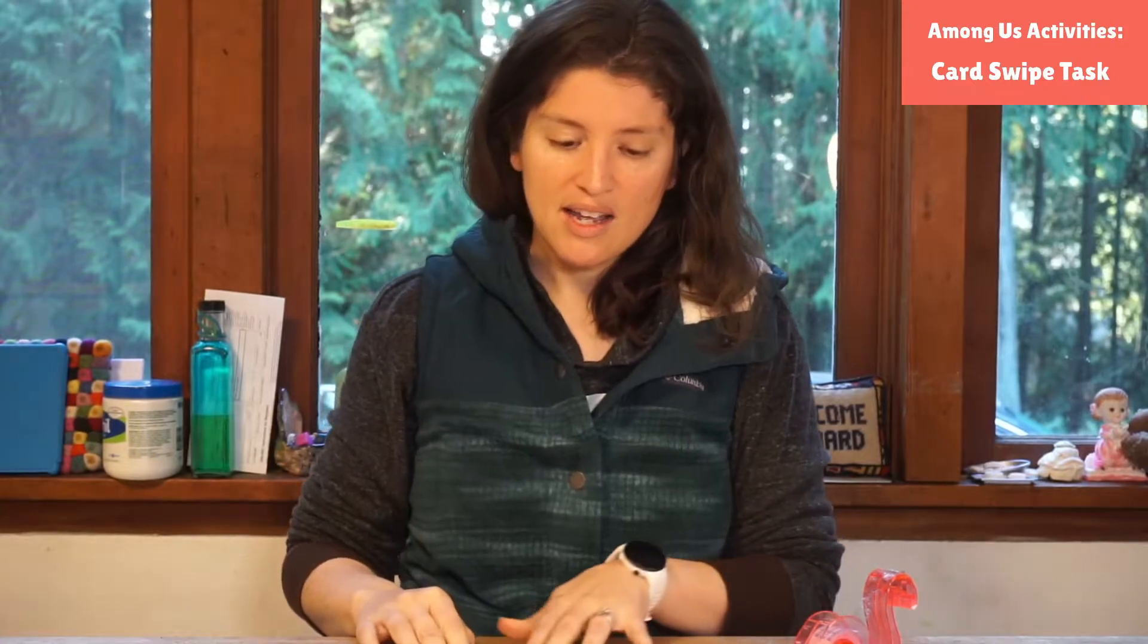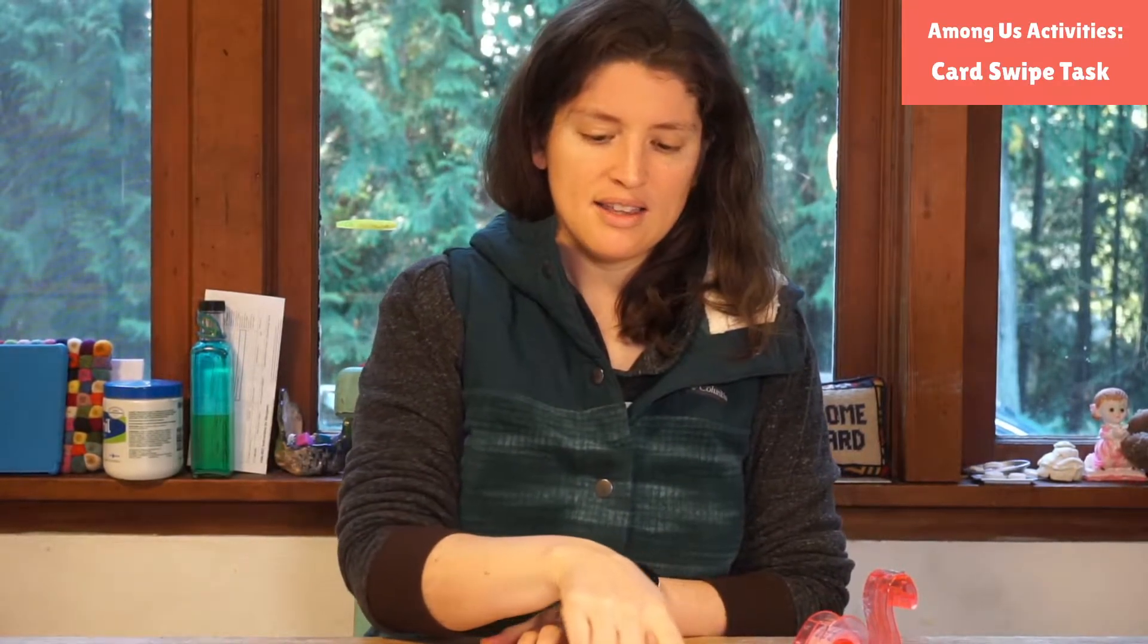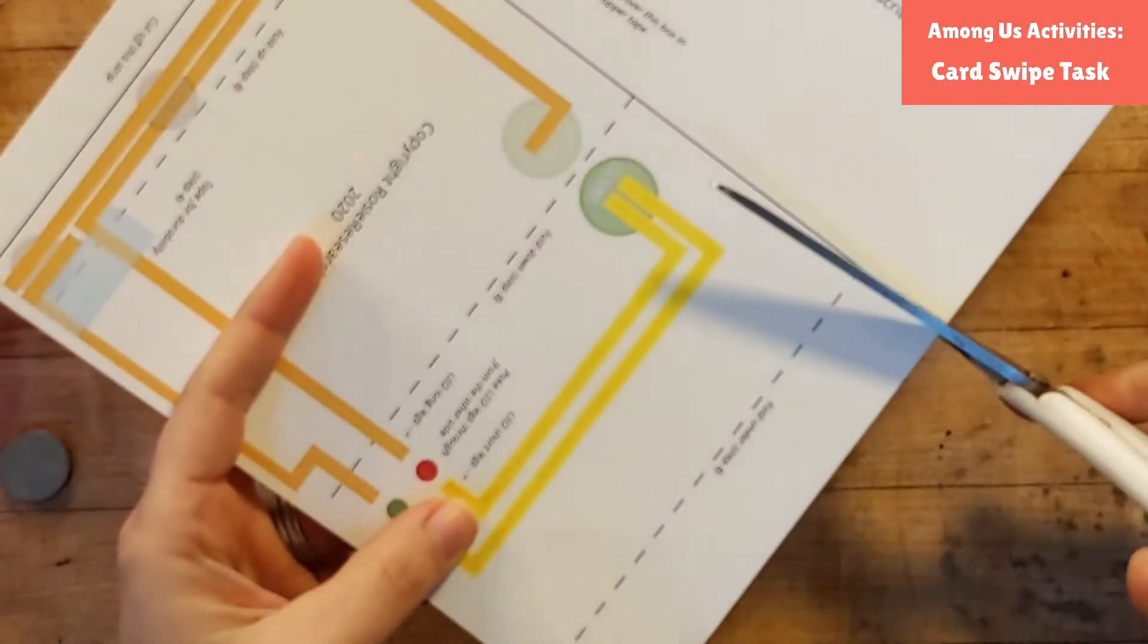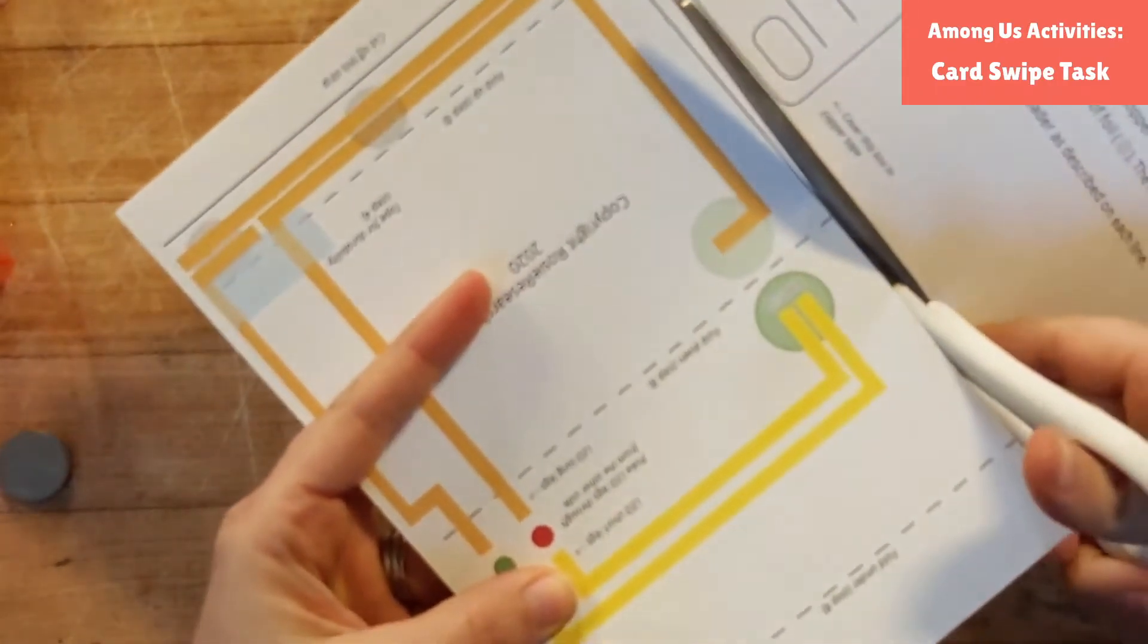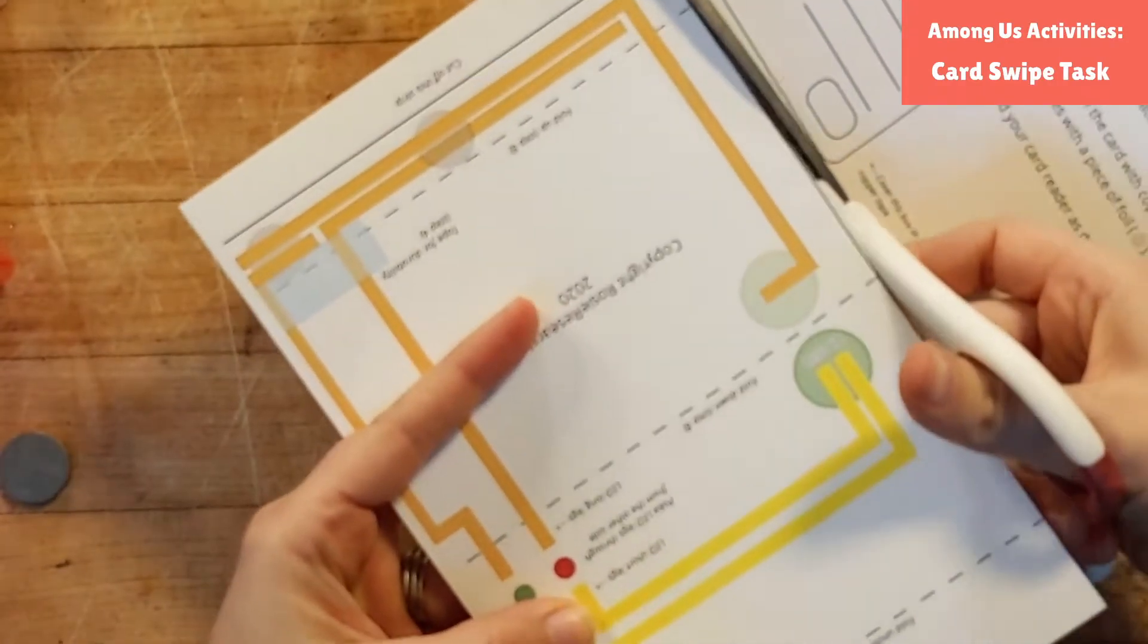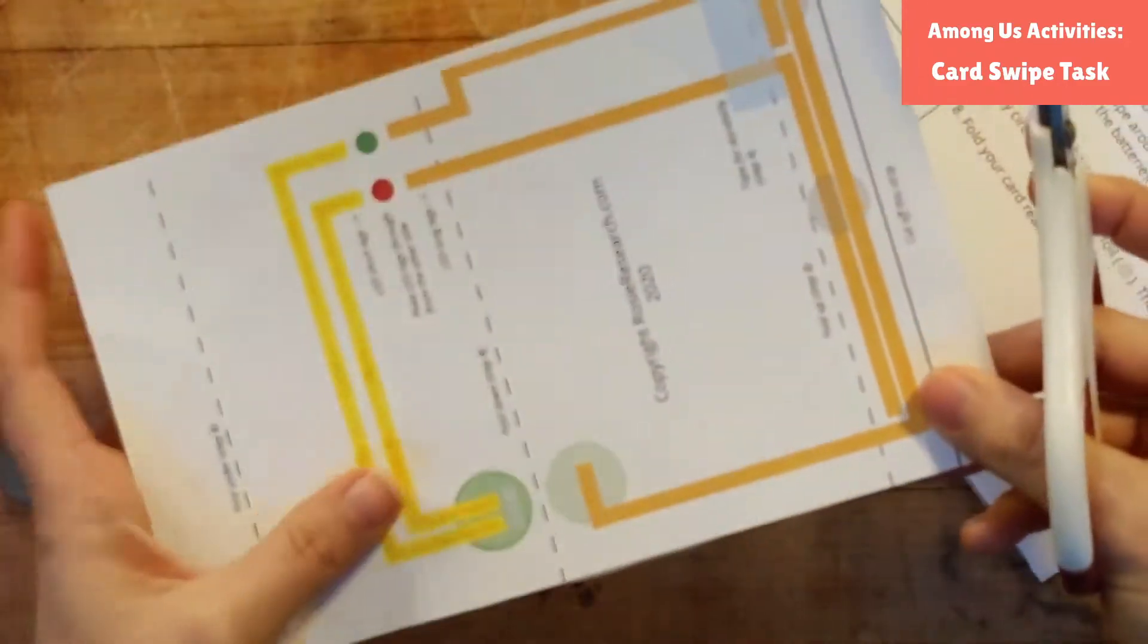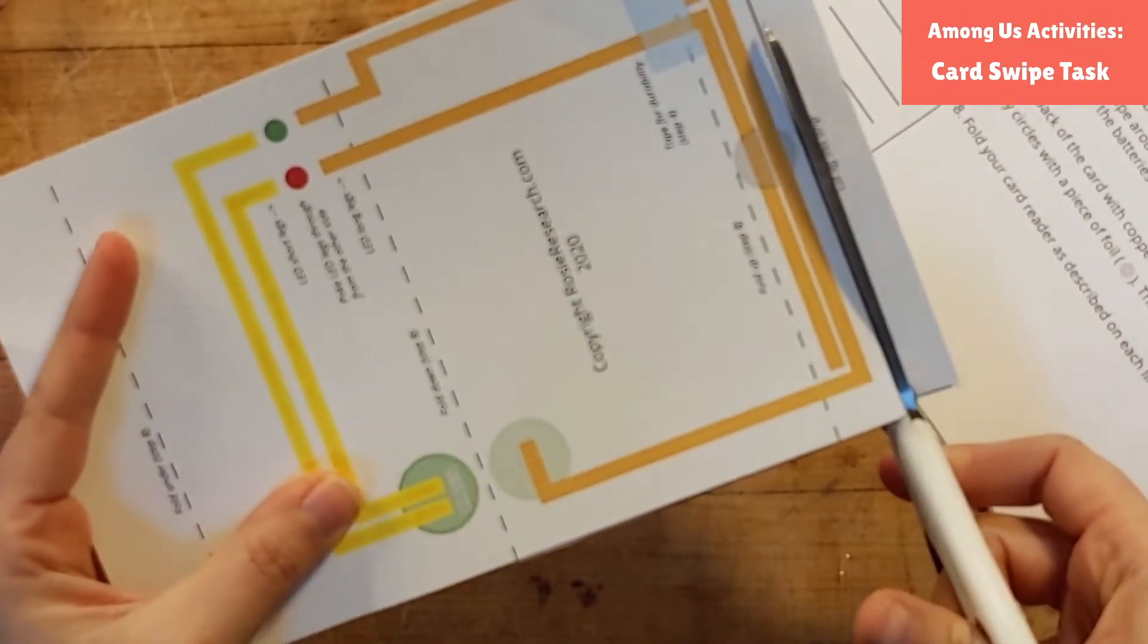All right, so to get started on the template it tells us that we just need to cut along this top line, along the solid line. So we're going to cut right down along this solid line just like this. And then there's actually another line at the very bottom and it says cut off this strip so you're going to cut along that solid line as well.